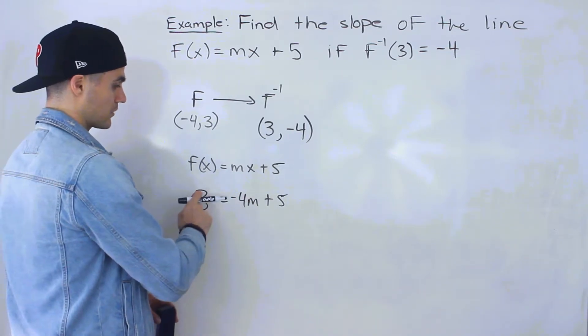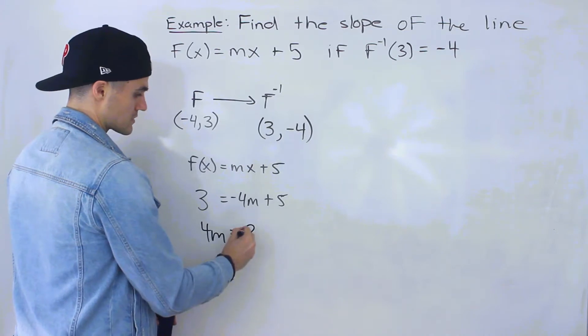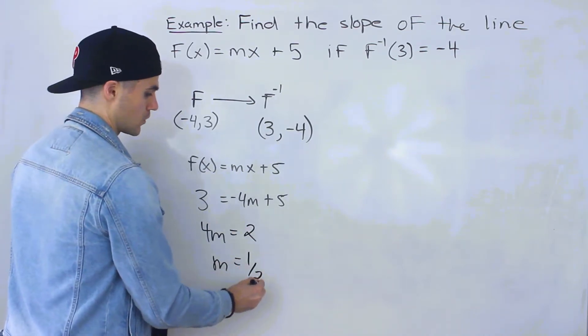So bring the negative 4m over, bring the 3 over. So I'll have 4m equals 2. 5 minus 3 gives us 2. So m is 2 over 4, which is 1 over 2.